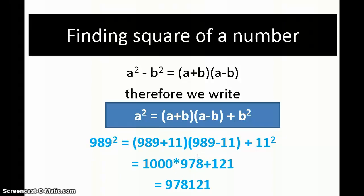Here, 989 plus 11 gives me the number 1000, and 989 minus 11 gives me 978. So I multiply 978 into 1000, which gives me 978 with three zeros, and then I put 121. So it becomes 978121.